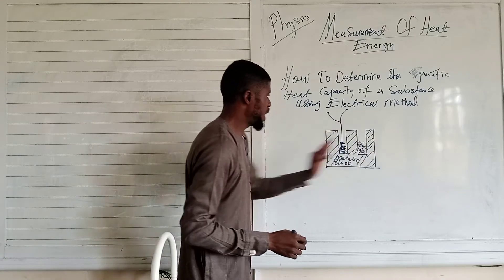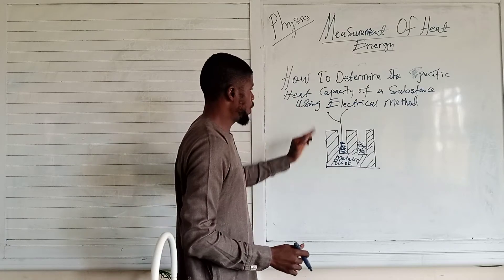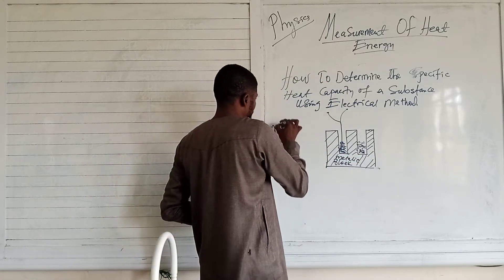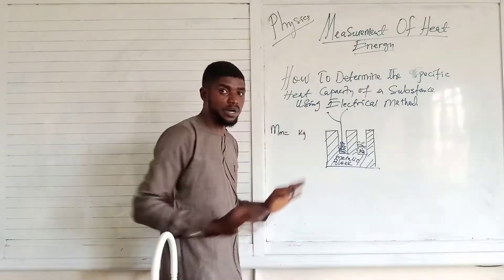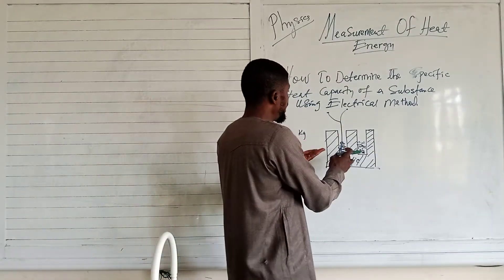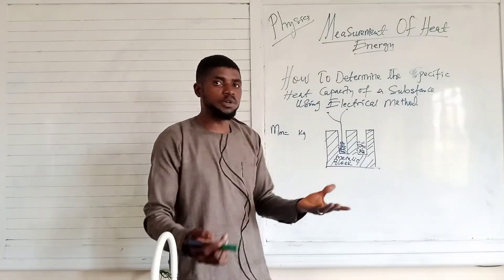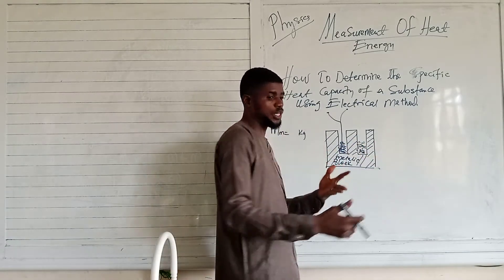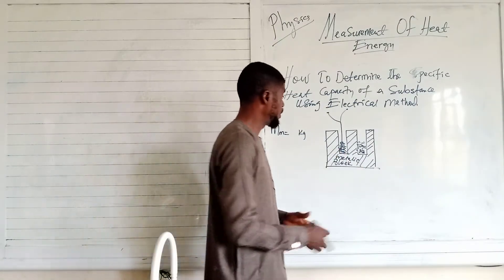Before all these things are done — when the holes are drilled on both sides — before you drop in the oil and the heater, first the mass of the block is recorded in kilograms. The mass of the liquid is neglected because it is negligible. We don't take note of the mass of the liquid the way we do in the other video with mass of water.